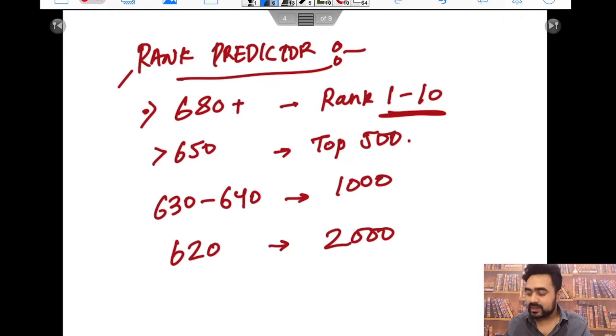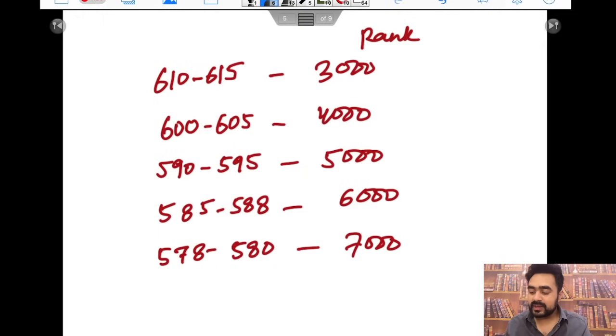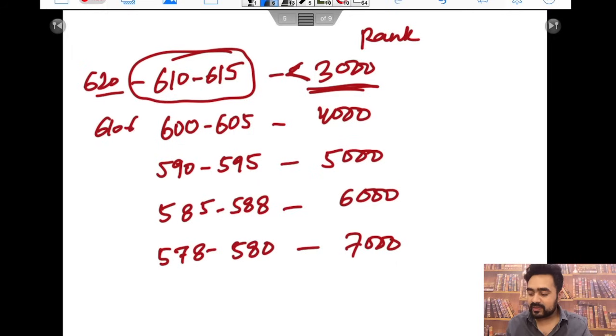630 to 640, you can expect a rank of around 1000. If you are scoring between a range of 640 to 620, then you can expect a rank of 2000. If you are scoring around 620 to 610-615, you can expect a rank under 3000 - 1 lakh same as around 610, 600. If you are expecting in this range, you can expect a rank of 4000.